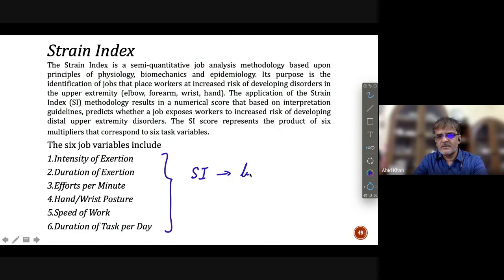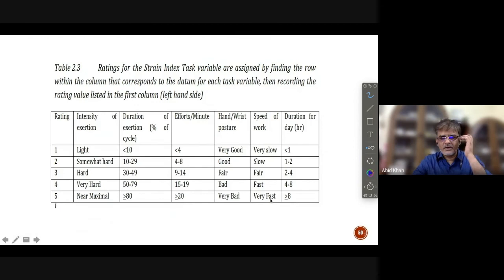That is an indication of level of risk involved in repetitive tasks. These are very common in industry and a very huge population of workers are involved in this kind of activity. Now what Gurg did, they made categories for each factor or each variable.